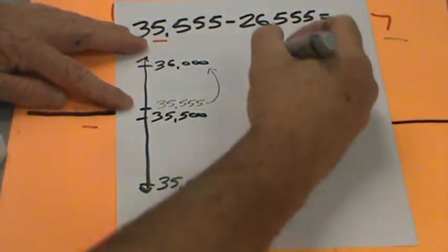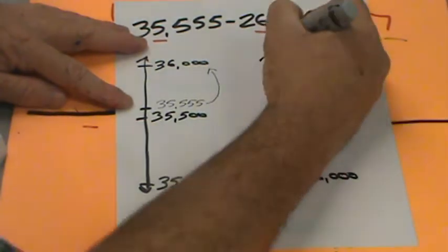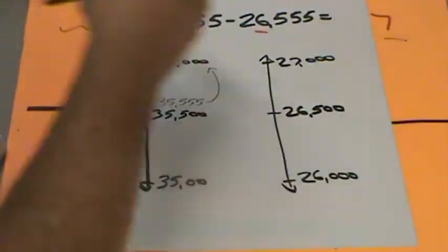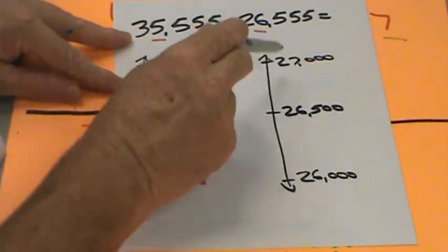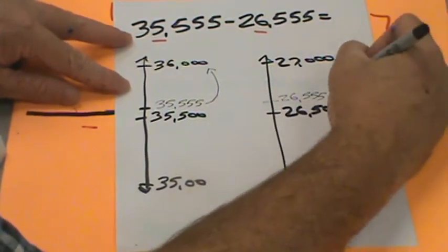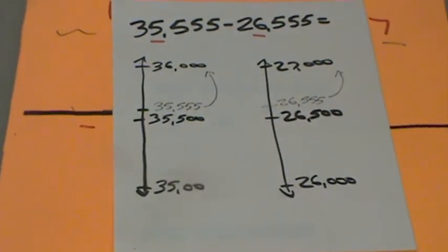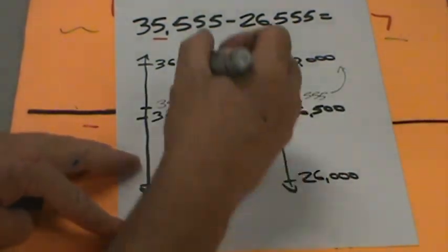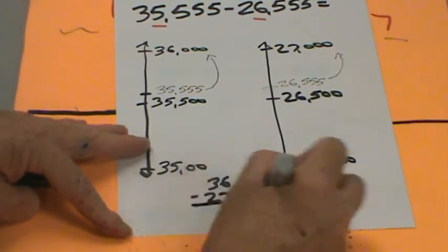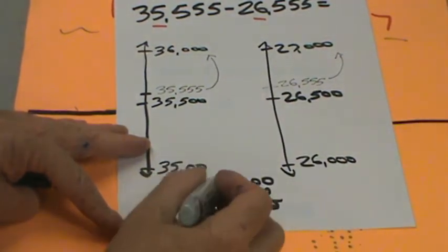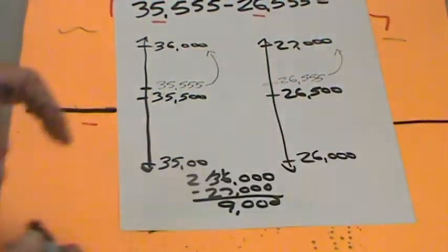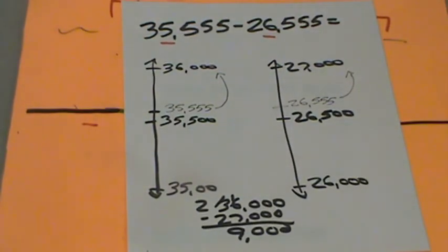For 26,555: the endpoints are 26,000 and 27,000, and the midpoint is 26,500. We have 26,555, which is greater than 26,500, so we round up to 27,000. Now: 36,000 minus 27,000 — careful, don't do seven minus six! 16 minus seven is nine, so the difference is nine thousand. That's a more accurate estimate — this person spent about nine thousand dollars more.